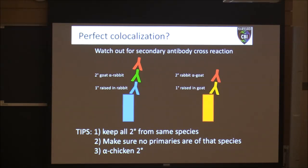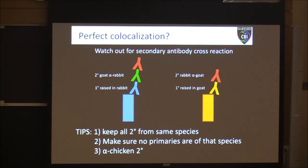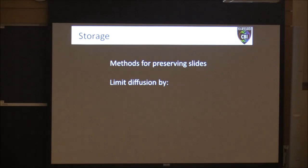My tips to avoid this: keep your secondary antibodies all raised in the same species, and make sure none of your primaries were raised in that species. I personally like to order anti-chicken secondary antibodies because no primary antibodies I've encountered are raised in chicken, but there's a pretty wide range of secondary antibodies available that aren't anti-chicken — so you don't have to worry about any of those bizarre cross-reactions.